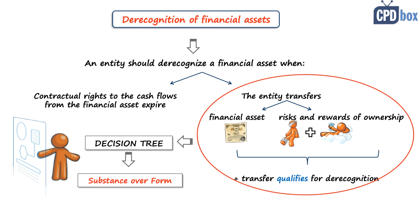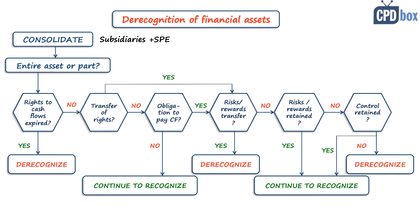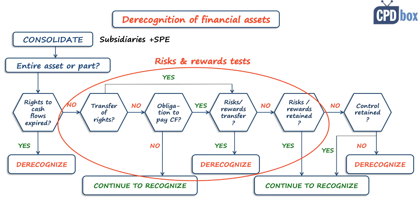Sometimes a transaction is called a sale but the seller retains all the risks related to the asset. So IFRS 9 is sticky on recognition — it is much simpler to recognize an asset than to de-recognize it. The decision tree requires going through a number of questions, performing a risks and rewards test to assess whether the risks or rewards stay with the entity or are transferred, and also a control test to assess who retains control — the seller or the buyer.